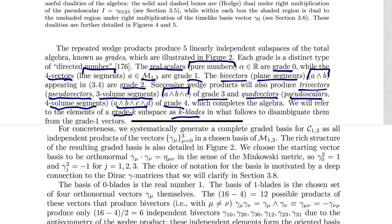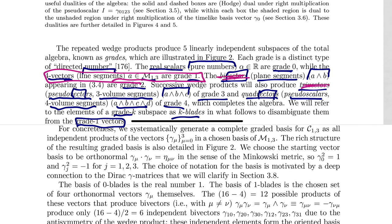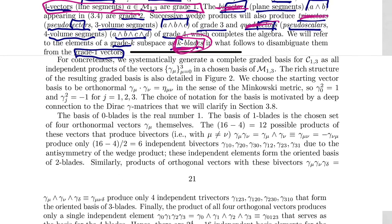The paper uses the word 'blade' to disambiguate from grade-one vectors. Using the word 'vector' all over the place becomes a mess — we want 'vector' to represent just the four-vectors, the members of M1,3. So instead of bivector, trivector, quadvector, they're called two-blades, three-blades, four-blades. The more I think about it, the more I like their use of the word 'blade.'